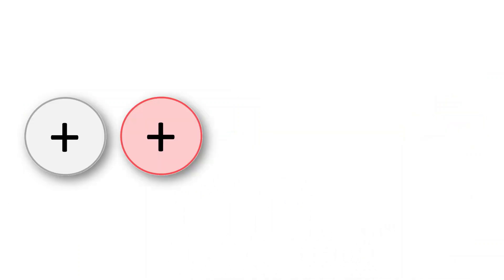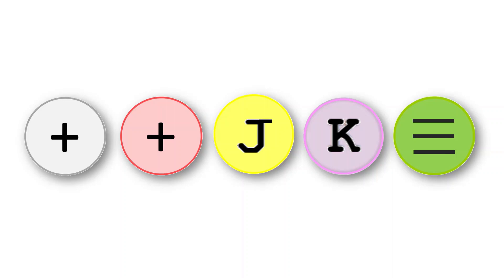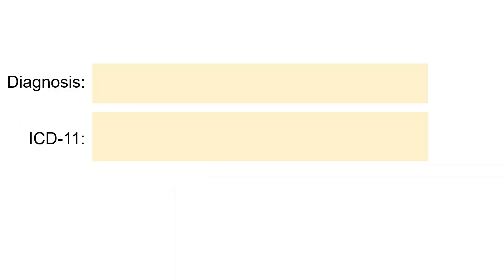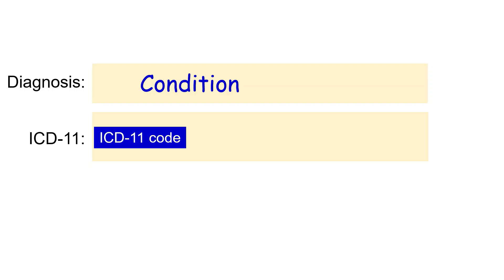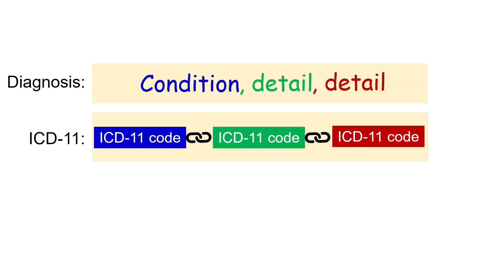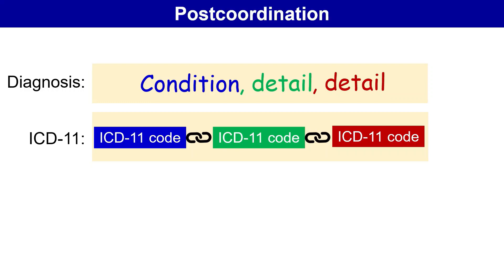The ICD-11 coding tool provides coding guidance through five icons. We'll start with the first two. When reporting a diagnosis, ICD-11 enables us to describe a condition to any level of detail by combining multiple codes together. This is called post-coordination, and the resulting combination of codes is called a cluster.